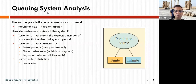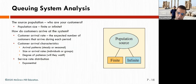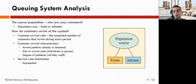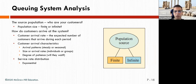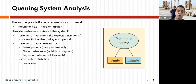Looking at the queuing system analysis, there are two population sources: finite and infinite. Finite is like an oil change shop where there is a certain number of cars that can wait. Infinite is like a football arena or a mall where potentially unlimited people may come. The key question is: who are your customers? The population size could be finite or infinite.